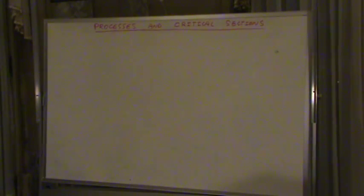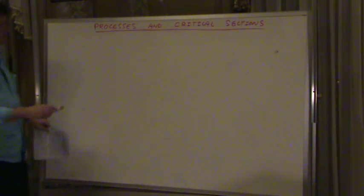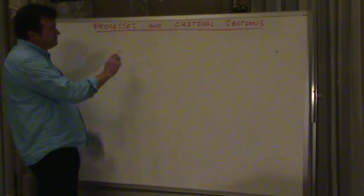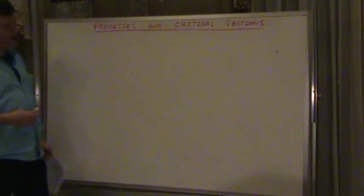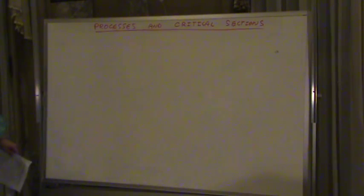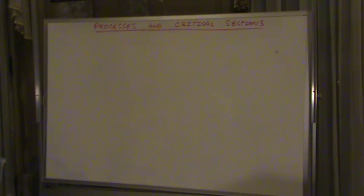Tonight we'll talk about how an operating system manages processes and then handling what we call a piece of code called the critical section.